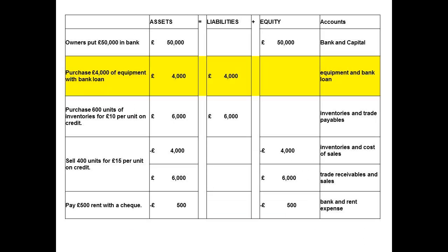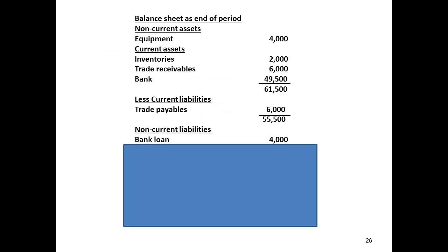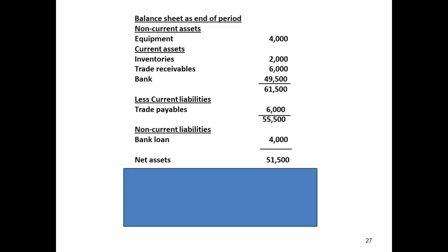There is also an amount owed that is not a current liability — this is the bank loan for £4,000. I have entered the figure of £4,000 as a non-current liability. I now calculate the figure for assets less liabilities, which gives me a figure of £51,500.